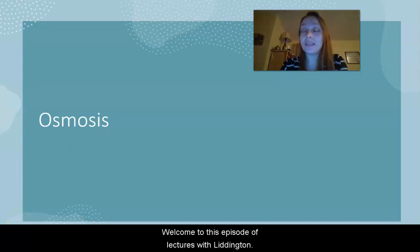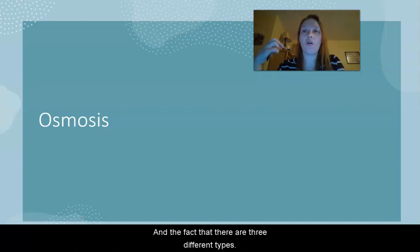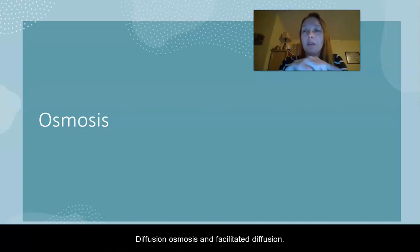Alright, welcome to this episode of Lectures with Lidington. Last episode, we talked about passive transport and the fact that there are three different types: diffusion, osmosis, and facilitated diffusion.